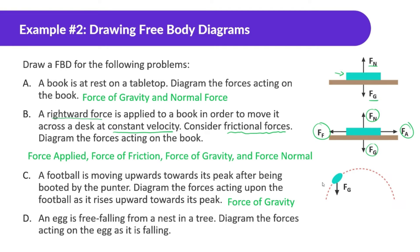An egg is free falling from a nest in a tree — diagram the forces acting on the egg as it falls. It's just the force of gravity. We're not talking about air resistance unless it specifically mentions air resistance.